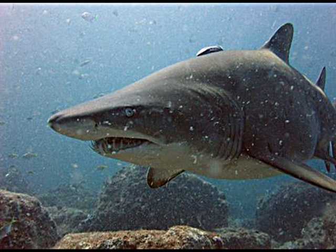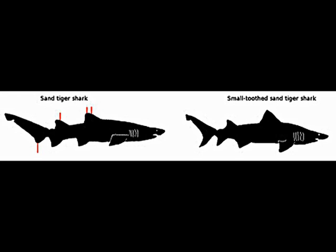The Sand Tiger can gulp air from the surface, allowing it to be suspended in the water column with minimal effort. There are two existing species of Sand Tiger Shark: C. taurus and O. fairrocks.